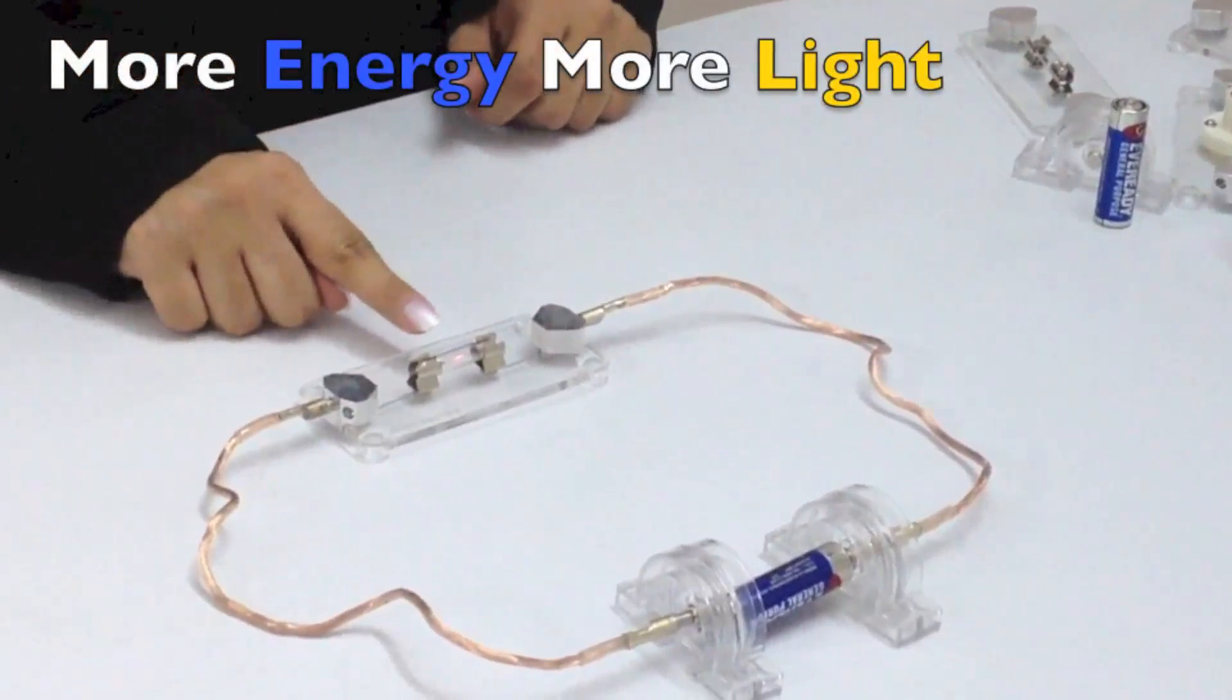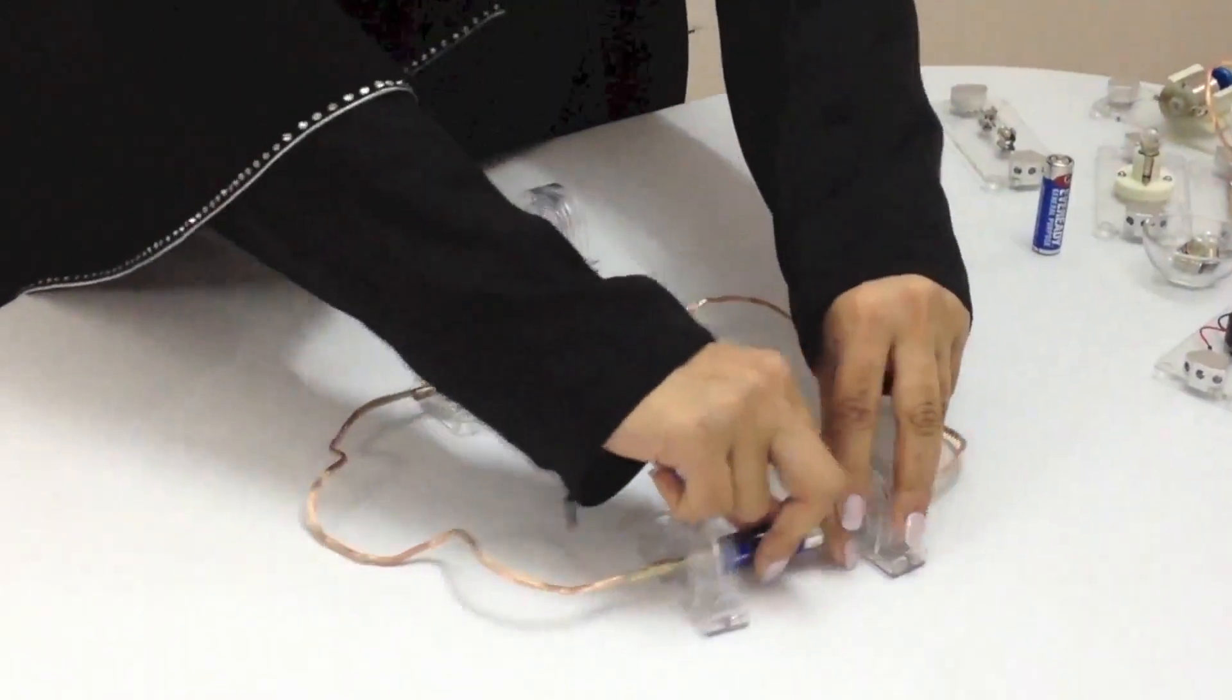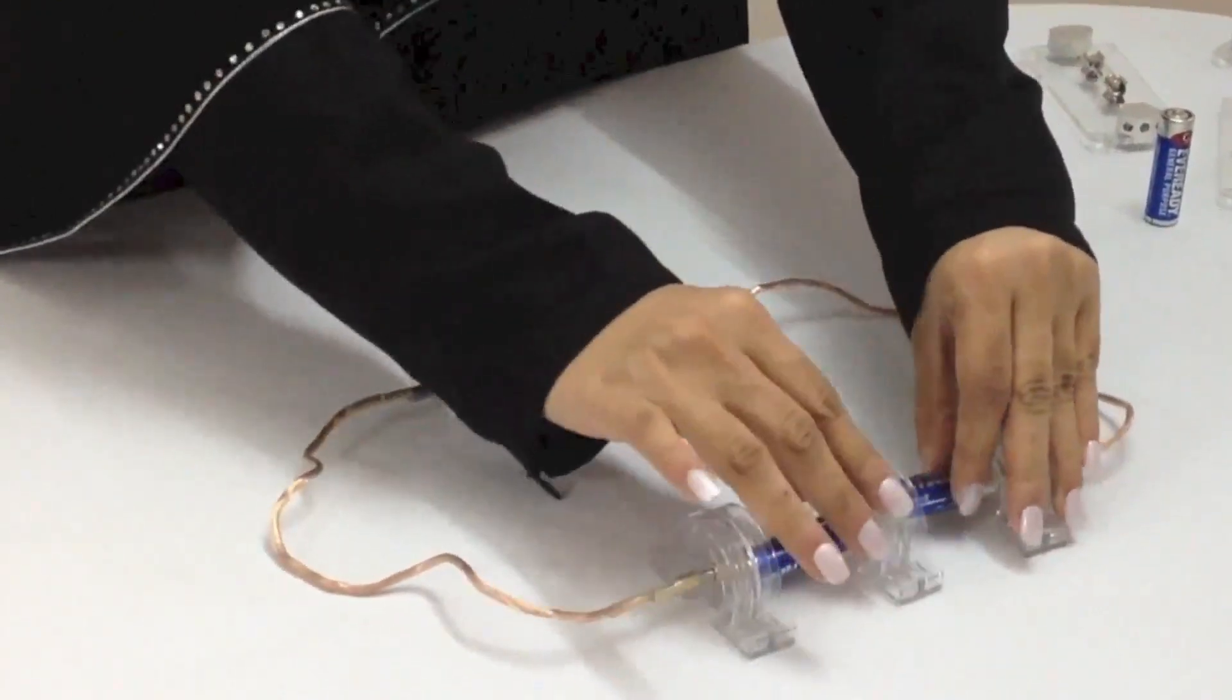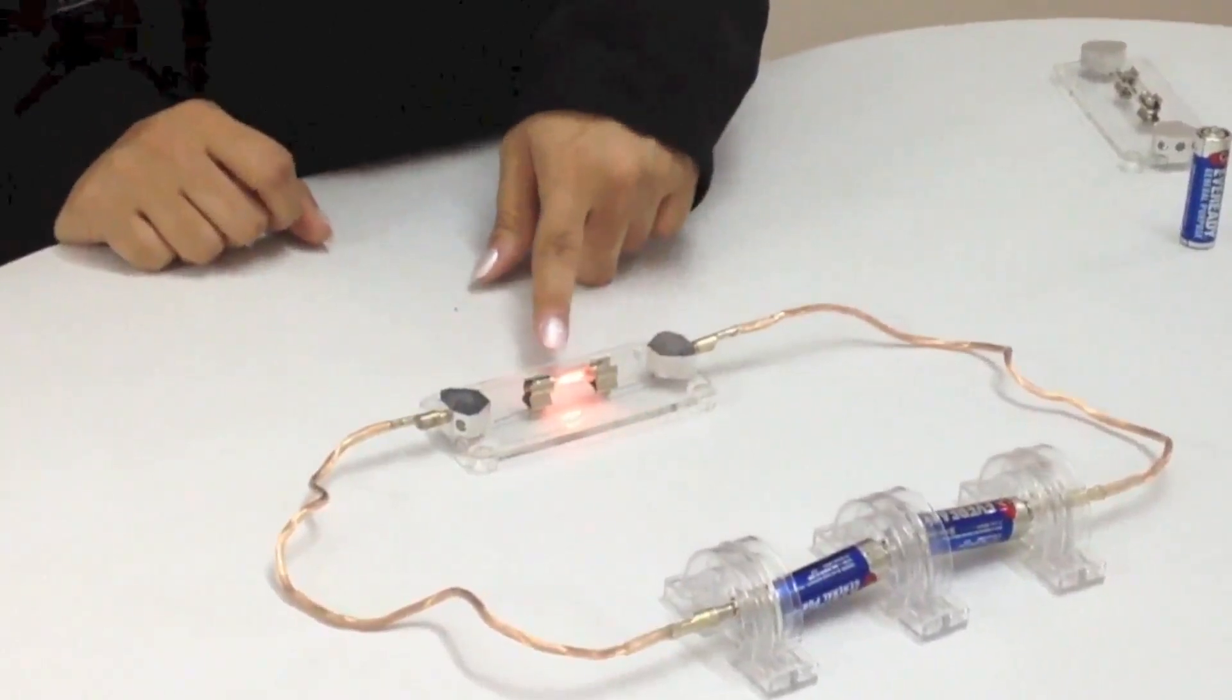Now I'm going to add a battery to give more light to this bulb, so that it can light brighter. The bulb is brighter because two batteries are giving energy to it.